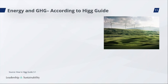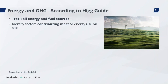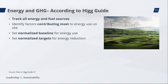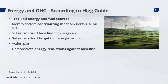To achieve this, the section requires a strong focus on operational activities and how resources are used while reducing environmental impact. This includes: tracking all energy and fuel sources and reporting quantities used in the last calendar year; identifying which factors contribute most to energy use on site; setting a normalized baseline for energy use (an absolute baseline can also be set); setting normalized targets for energy reduction; setting an action plan with specific actions – it's not enough to just set targets without a plan on how to reach them; and demonstrating energy reductions against the baseline.